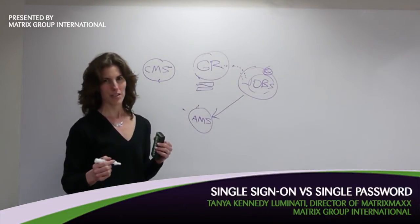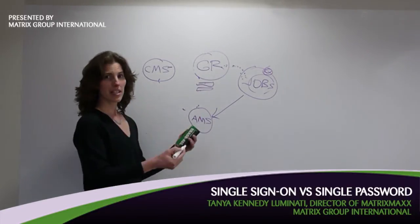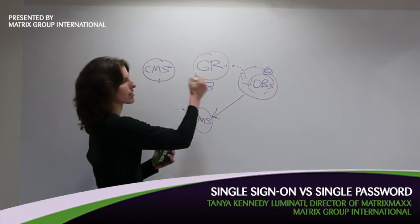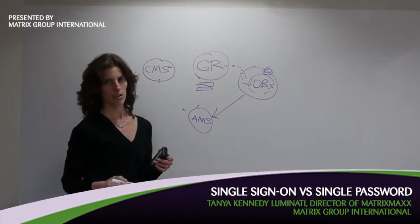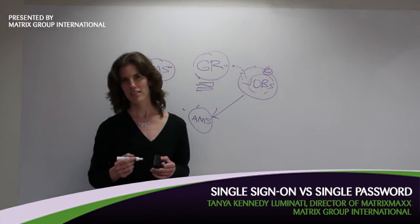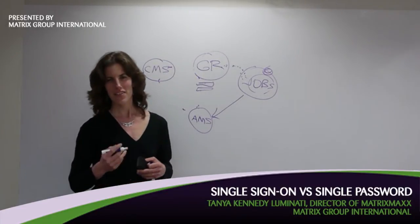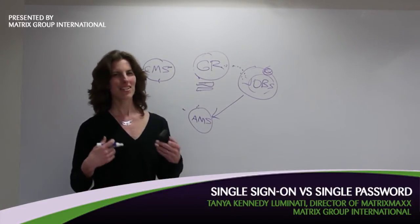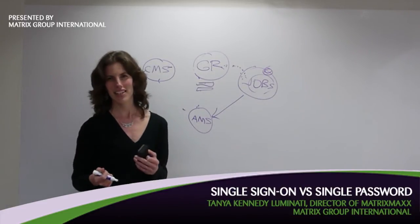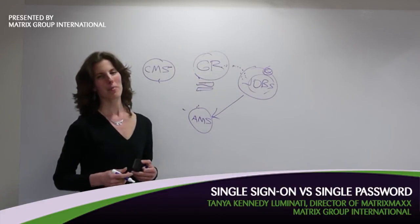So if your password is ABC123 — which I hope it's not — you could be in the scenario where you type ABC123 here and here and here, but you'd have to do it three or four times if you're also dealing with AMS pages. SSO is very desirable. From the user experience standpoint, users don't like logging in. They want to log in once, and once is really too much for a lot of people. So the easier we can make it for the user, the better.